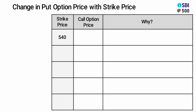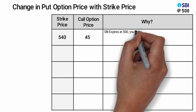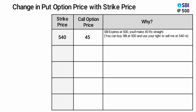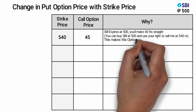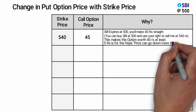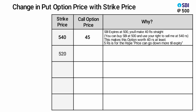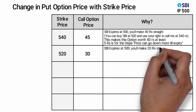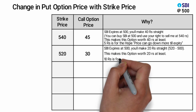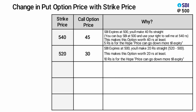For the 540 strike put option, I'll charge you 45 rupees. If SBI expires where it is, you can buy SBI at 500 and use your right to sell it to me at 540 rupees — making the option worth at least 40 rupees; 5 rupees is for the chance price goes down more till expiry. For the 520 strike price, I'm charging 30 rupees. If SBI expires where it is, you will make 20 rupees straight, making this option worth at least 20 rupees; 10 rupees is for the chance price goes down more till expiry.